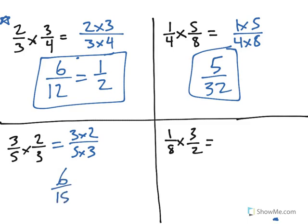6 fifteenths — we could simplify that by dividing both by 3 to get 2 fifths.